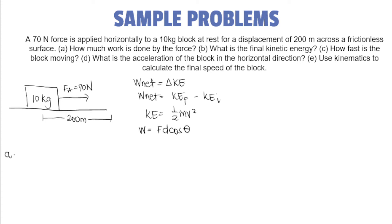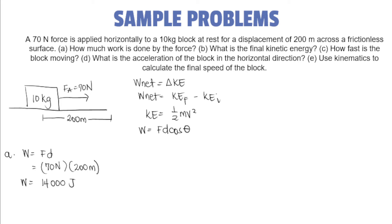So the first unknown is the work done by the force. We could use the equation F times d. The applied force is 70 newtons and the displacement of the block is 200 meters. So work done is equals to 14,000 newton-meters, or 14,000 joules, or simply 14 kilojoules. So that is for letter A.